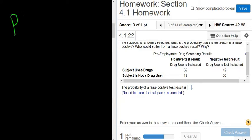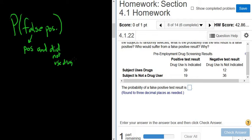So we want P, a false positive. I'll put false POS. So this is a drug test. So a false positive is a positive that's false. So this means positive, so the test is positive, and the person is not a drug user, so did not use drugs. That's what false positive means in this case.